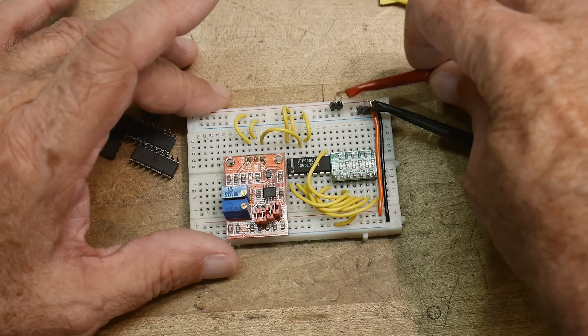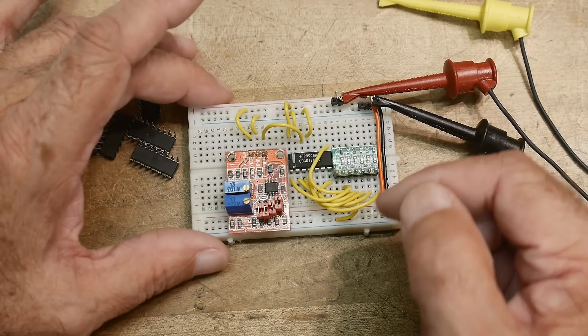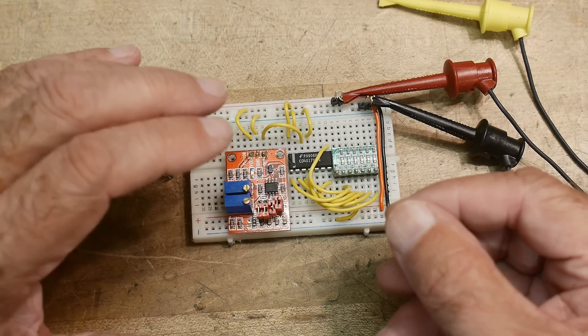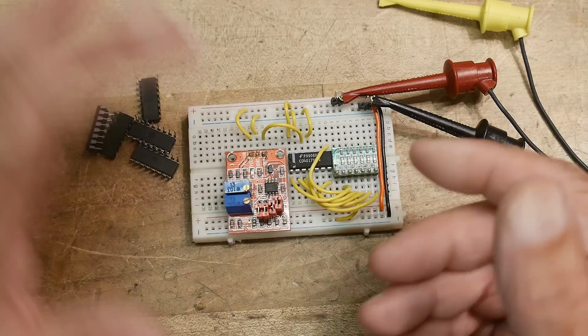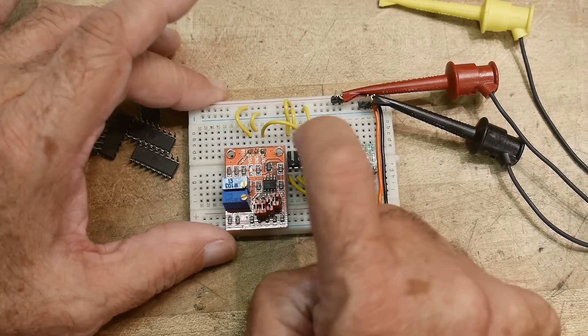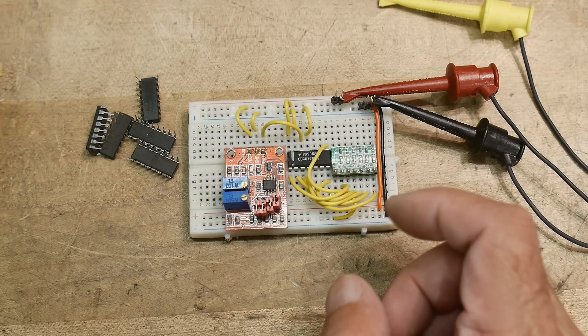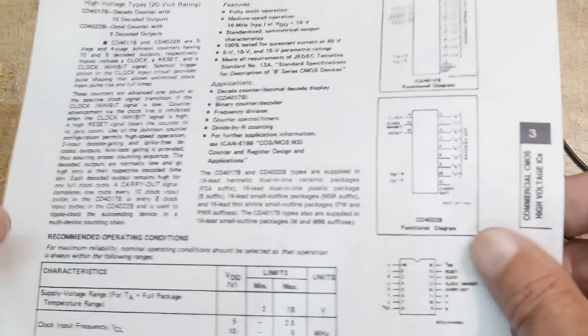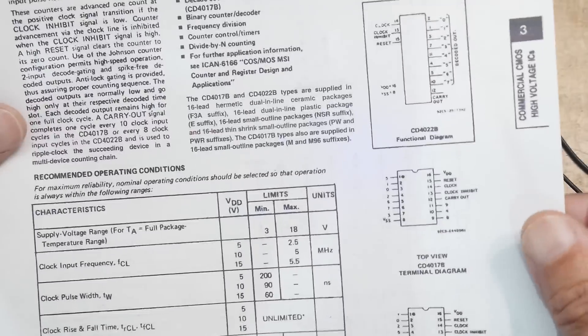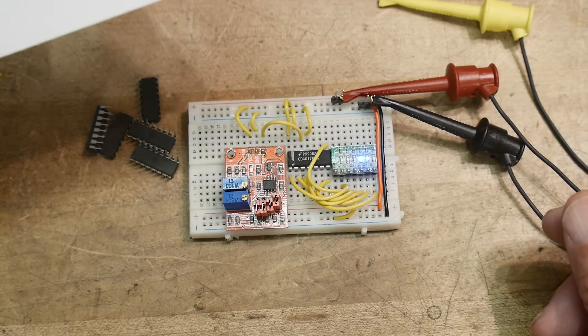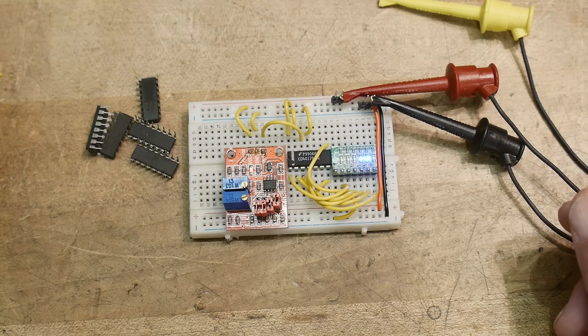A lot of times people think when they're designing analog circuits they can't throw in digital things because they don't have a 5 volt supply laying around. But these 4000 series parts allow you to put in digital logic on a 15 volt system or a 12 volt system.